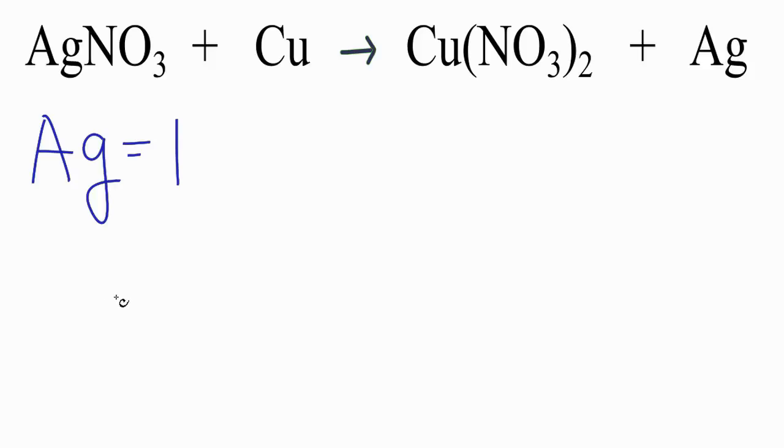So I'll start out with Ag, and I have one of those. Here's the trick to balancing this equation. I have a NO3 group right here, and I have two NO3 groups on this side. So rather than split this up, I'm just going to call it NO3. And I have one of those here, and then for copper, I have one copper atom.